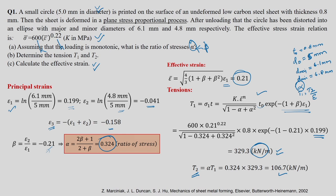t_2 is obtained by alpha times t_1, which is 0.324 times 329.3, giving approximately 106.7 kN/m. This is an easy problem — everything comes from the previous chapter: how to get epsilon_1, epsilon_2, epsilon_3, beta, alpha, and epsilon_bar. The only extension in this chapter is deriving equations for t_1 and t_2, the major and minor tensions.